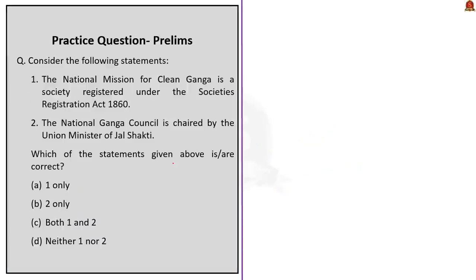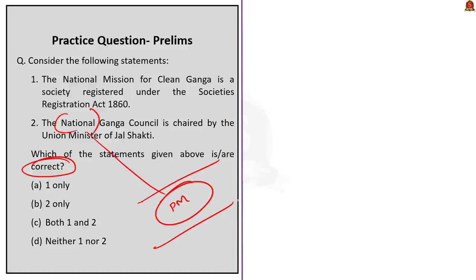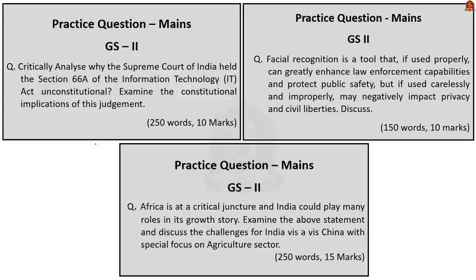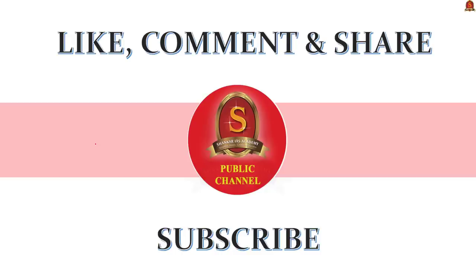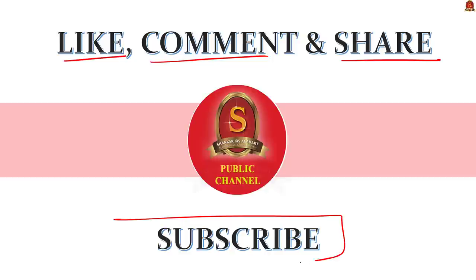Final prelims practice question: Statement 1 says the National Mission for Clean Ganga is a society registered under the Societies Registration Act of 1860. Statement 2 says the National Ganga Council is chaired by the Union Minister of Jal Shakti. Statement 1 is correct. Statement 2 is incorrect because the National Ganga Council is headed by the Prime Minister of India, not the Union Minister of Jal Shakti. Since the question asks for only the right statement, the correct answer is option A — Statement 1 only. The list of mains practice questions is displayed on screen; viewers can write their answers and post them in the comment section. That brings us to the end of today's Indian News Analysis. If you like the video, please like, comment, and share, and subscribe to Shankar IAS Academy's YouTube channel for more UPSC Civil Services preparation updates.